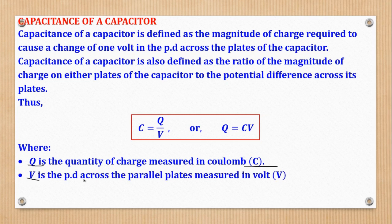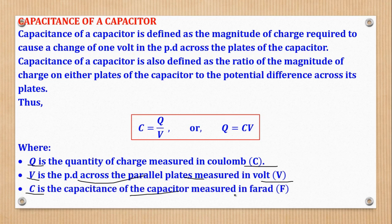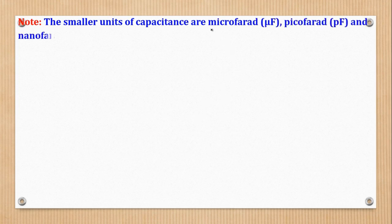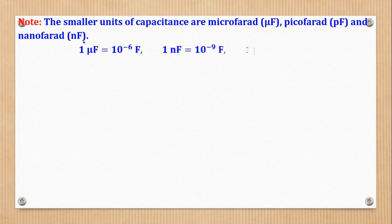Then V is the PD across the parallel plates and is measured in volts. And lastly, C is the capacitance of a capacitor and is measured in farad. So farad is the SI unit of capacitance of a capacitor. But sometimes they can give you smaller units, they can give you in terms of microfarad, which is μF, picofarad, which is pF, or nanofarad, which is nF.